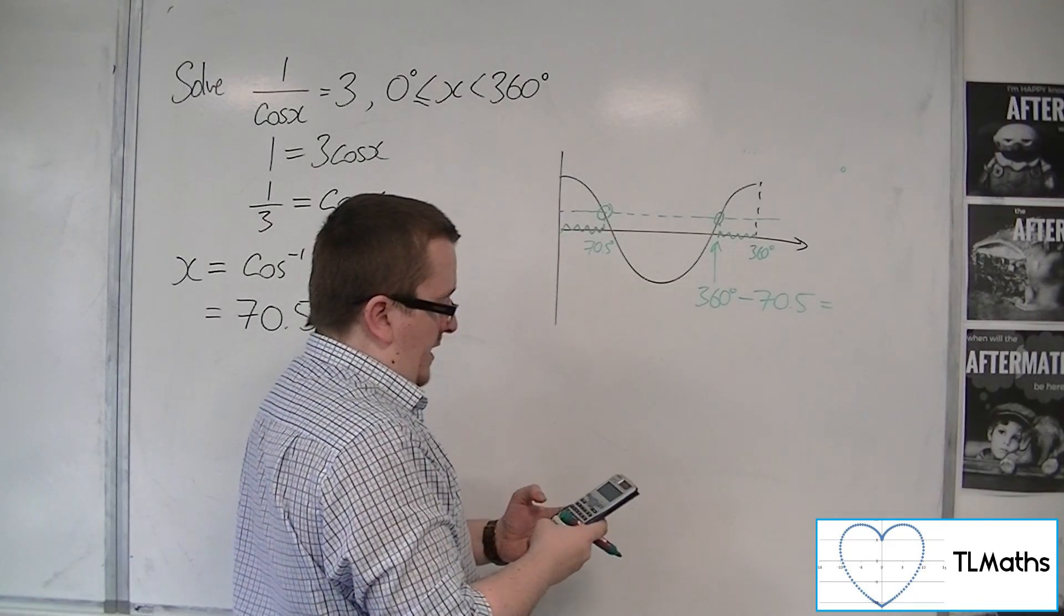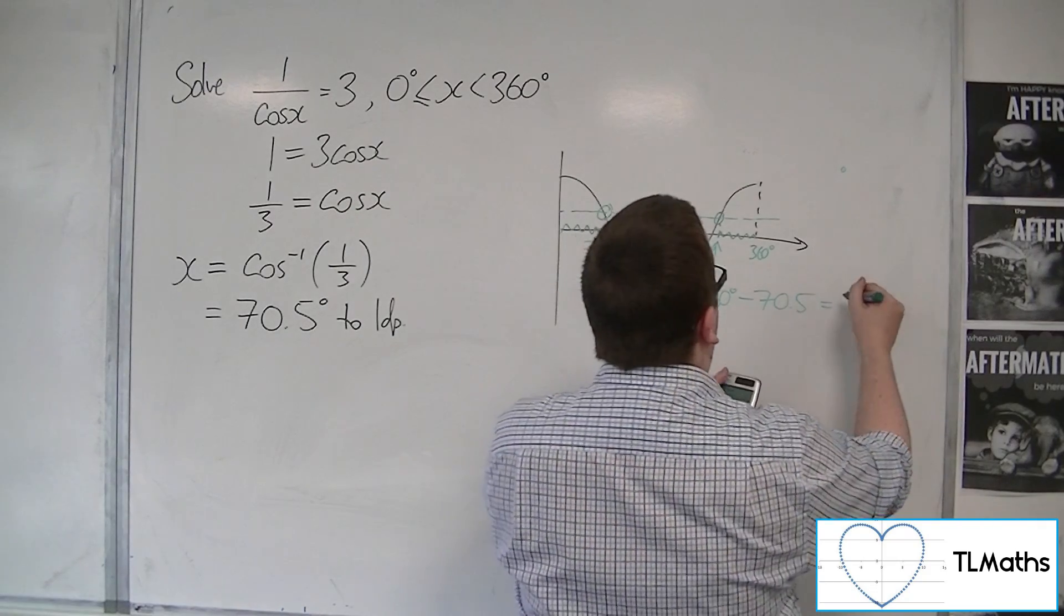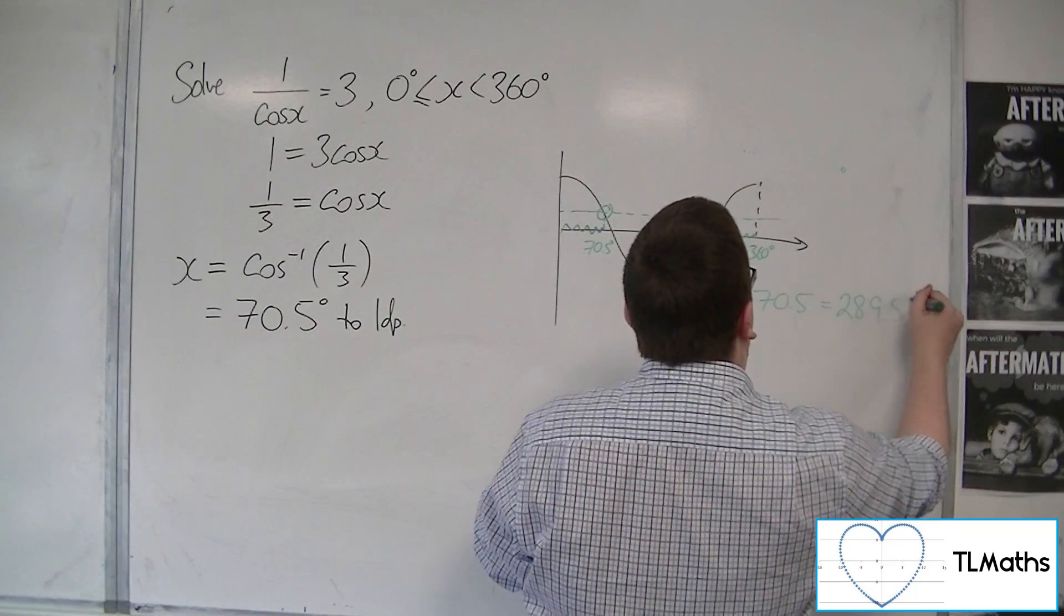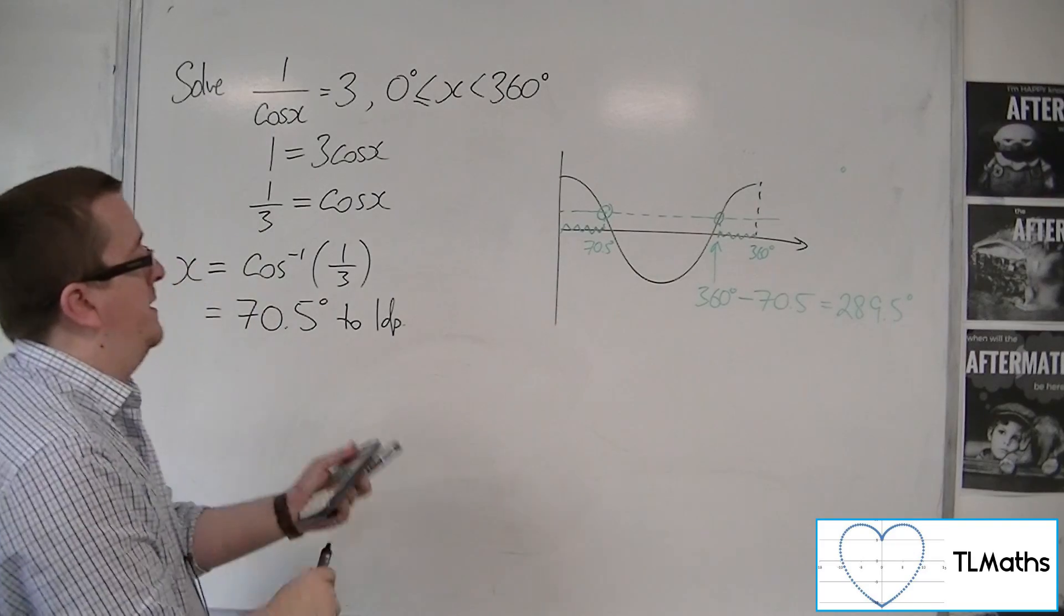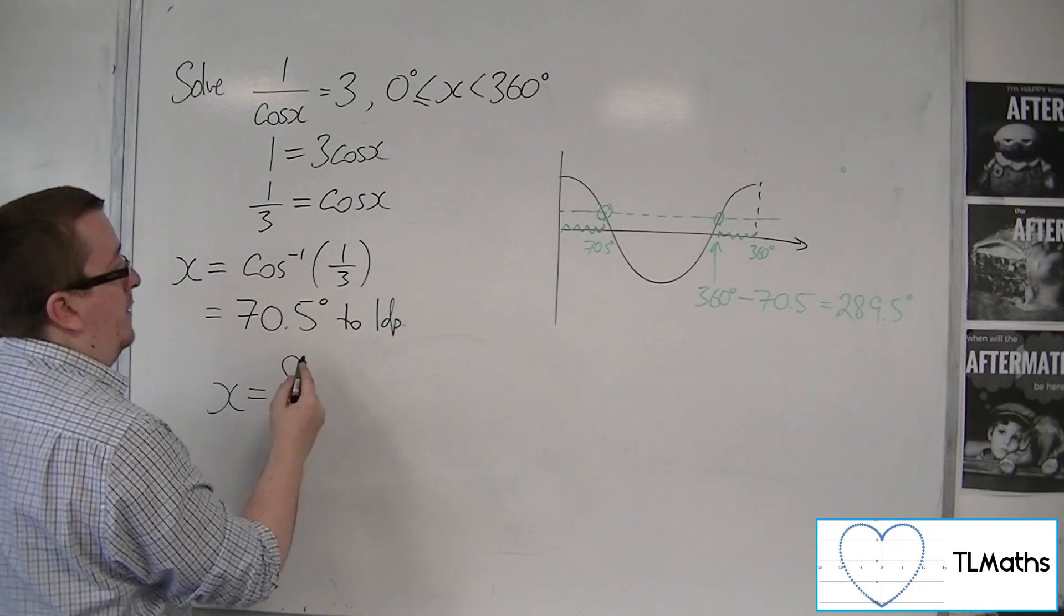So 360 take away 70.5 is 289.5 to 1 decimal place.